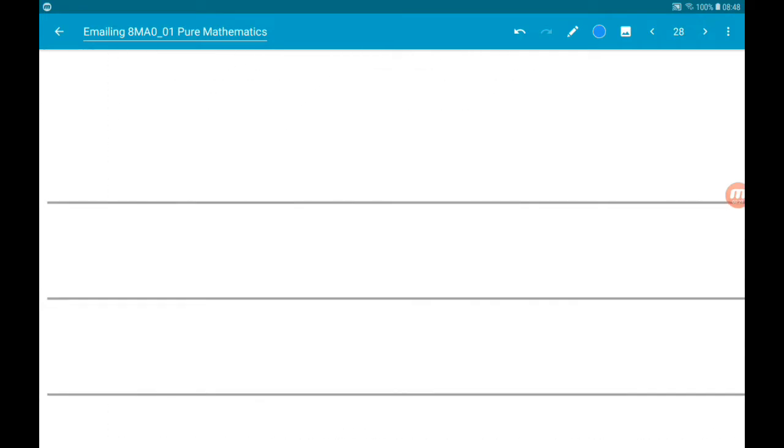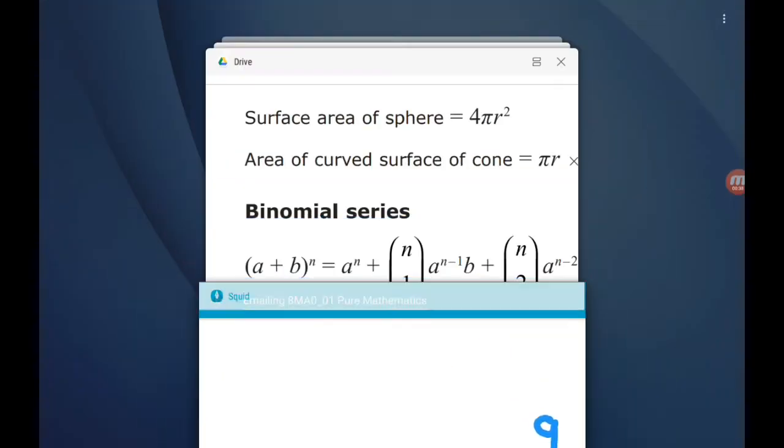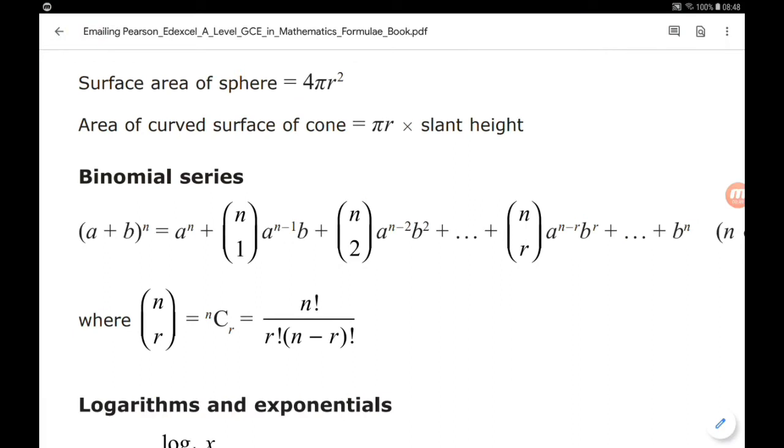So we can say that 2 minus x over 16 to the power of 9 is approximately equal to, let's take a look at the formula. Remember you can get the formula sheet down below in the description. So there's the formula. To be fair, I always think it complicates things, makes it look a lot scarier than it is. There is a pattern.